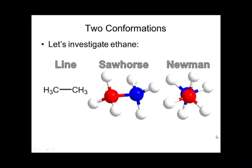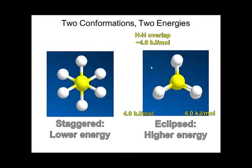For ethane we can draw a Newman projection, but there are several depictions: the line structure, the sawhorse — which is the line structure slightly turned on an angle so you can see both carbons from the side — and the Newman projection, where the front and back carbons are directly in front of one another. The staggered conformation, where the dihedral angle between front and back hydrogens is 60 degrees, is always the lowest energy conformation.